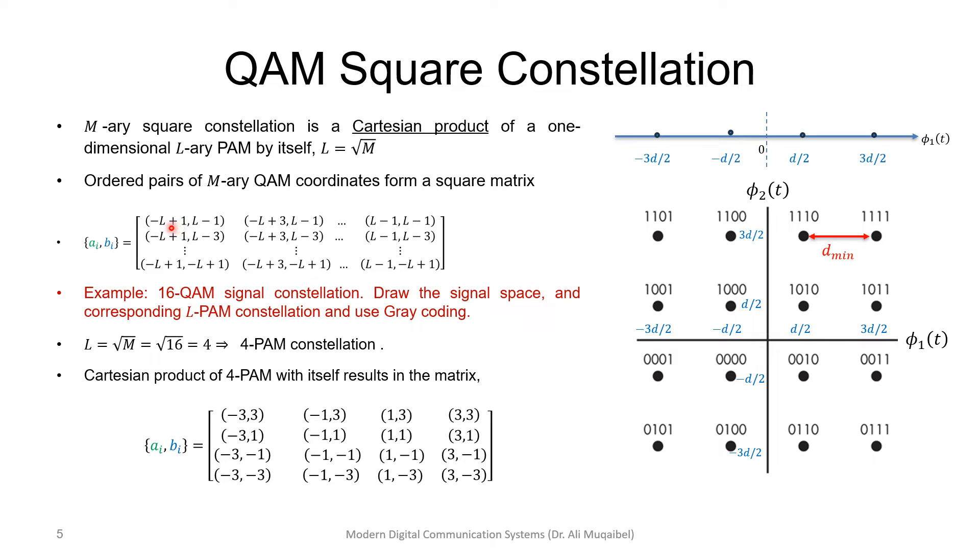We can order pairs of M-ary QAM coordinates. In this example, L equals 4. We can create all possible coordinates for the product here. For 16-QAM signal constellation, draw the signal space and use Gray coding. This is the 16, and this is the 4-PAM.